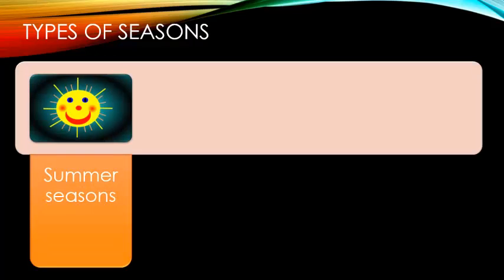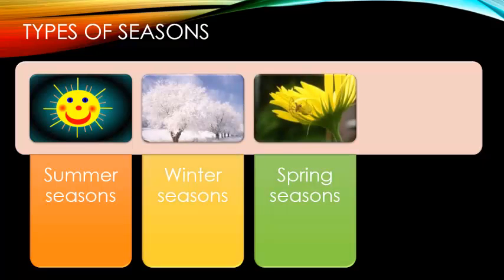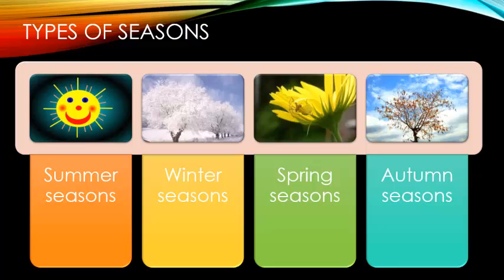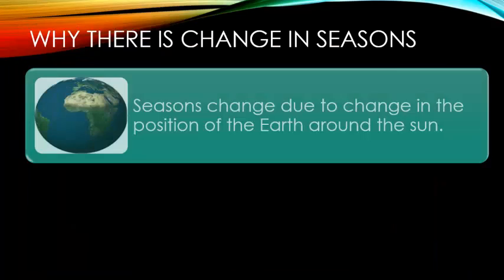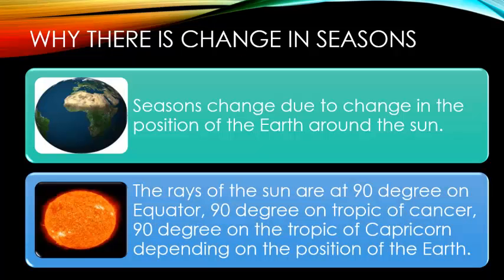Why is there a change in seasons? Seasons change due to change in the position of the earth around the sun. The rays of the sun fall at 90 degrees on the equator, 90 degrees on the Tropic of Cancer, or 90 degrees on the Tropic of Capricorn, depending on the position of the earth.